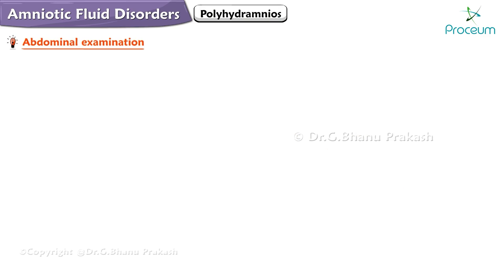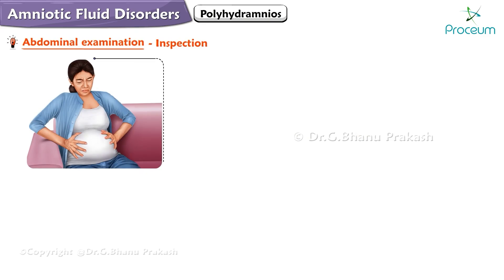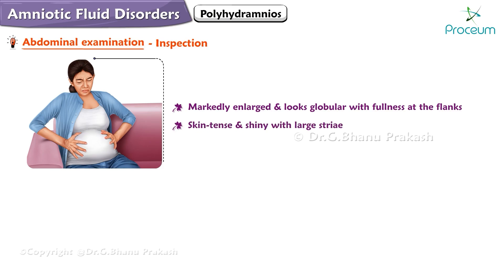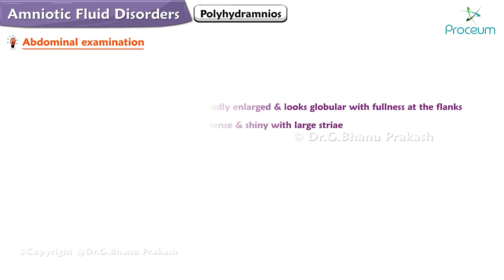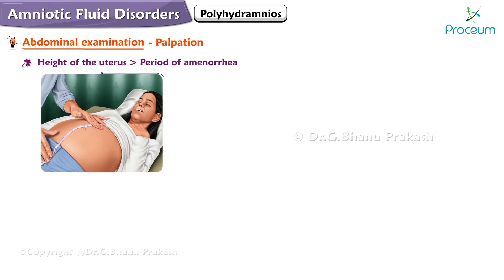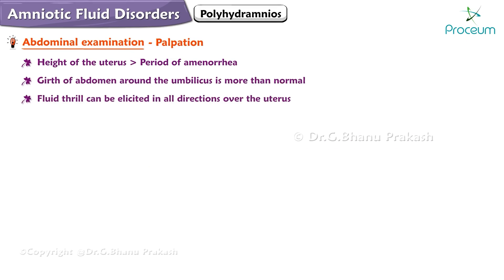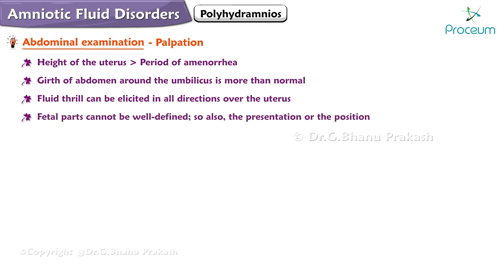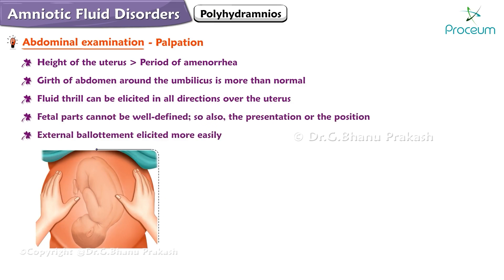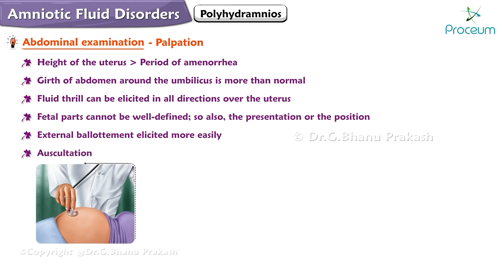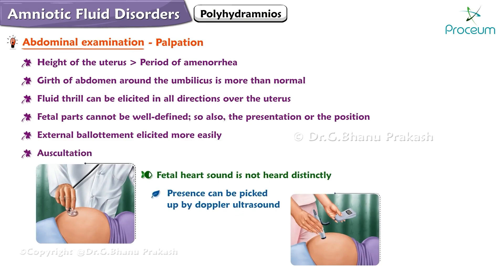Now let's learn about the abdominal examination. On inspection, the abdomen is markedly enlarged and looks globular with fullness at the flanks; the skin is tense and shiny with large striae. On palpation, the height of the uterus is more than the period of amenorrhea, and the girth around the umbilicus is more than normal. Fluid thrill can be elicited in all directions over the uterus. The fetal parts cannot be well defined, so also the presentation or position. External ballottement can be elicited more easily. On auscultation, the fetal heart sound is not heard distinctly, although its presence can be picked up by Doppler ultrasound.